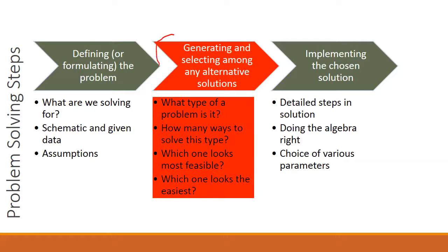So this is the second step of problem solving. Again, we will try to follow the template, although the type of problem we're doing is more straightforward. We don't need all of these directly, but we still have some of the same steps. So what type of a problem is it and how many ways to solve this type?